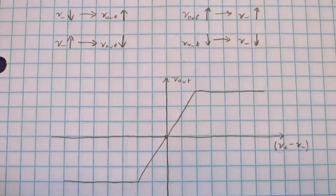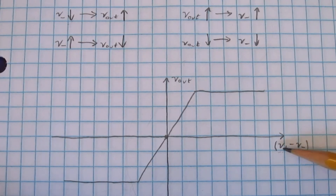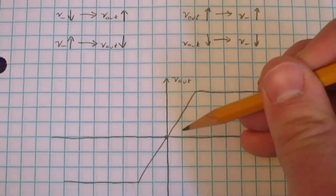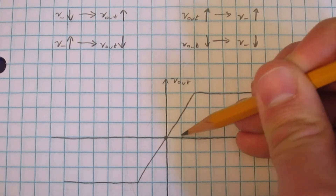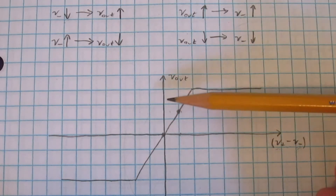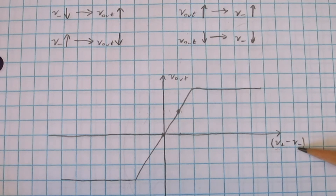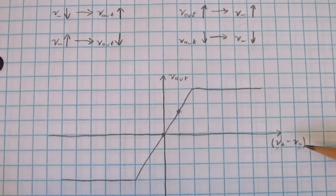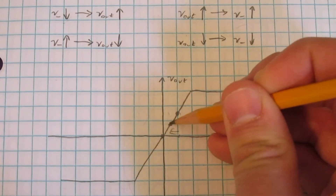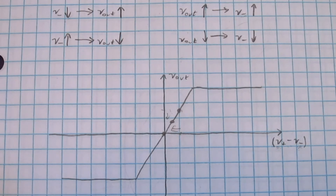Let's lower our input voltage, which is going to lower V-minus. As we lower V-minus, V-plus minus V-minus is going to get larger, so we're moving in this direction on our graph. Let's say we move out to here, and the output voltage gets higher. Now applying part two: the output voltage went up, so that's going to raise V-minus. As V-minus goes up, V-plus minus V-minus is going to go down, which pushes us back towards the origin, and V-out then goes down again.